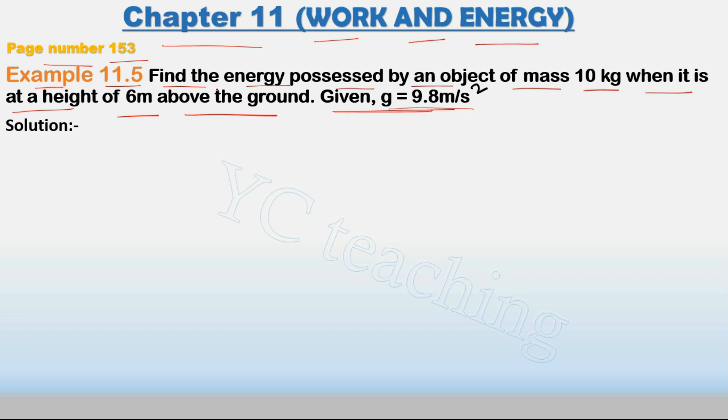See, find the energy possessed by an object of mass 10 kg. An object is at a height of 6 meter above the ground. It means that it is at a height of 6 meter above the ground.